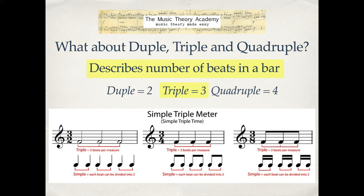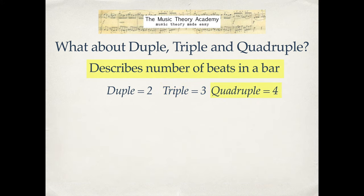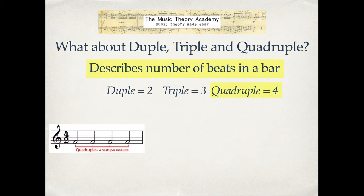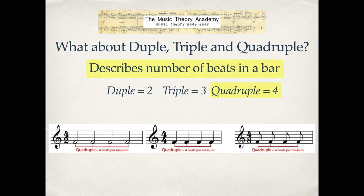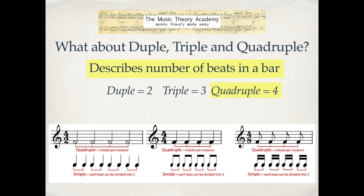So those examples are simple triple meter or simple triple time. You're combining either simple or compound with duple, triple, or quadruple. A last example — quadruple: four beats in a bar. There are four minims or four half notes, or four crotchets or four quarter notes, or four quavers or four eighth notes. Each of these is quadruple, and they're also simple because each beat can be divided into two.